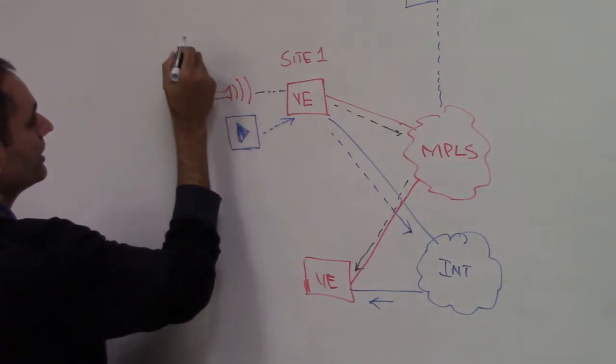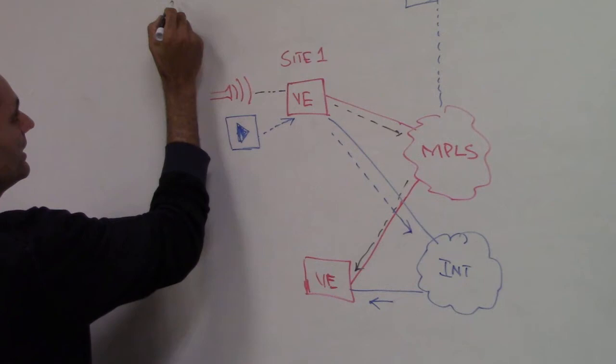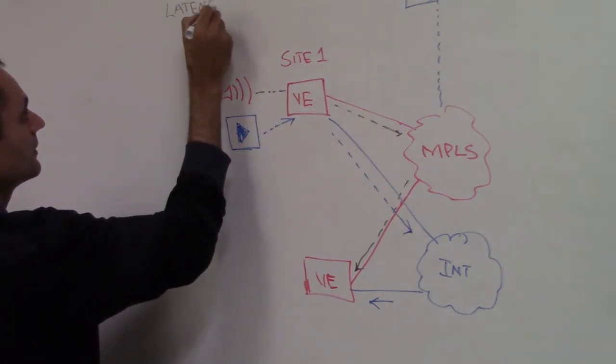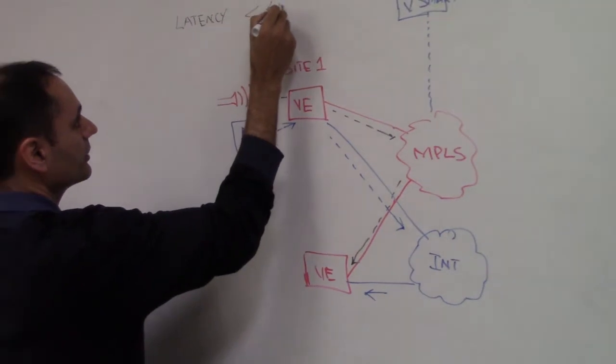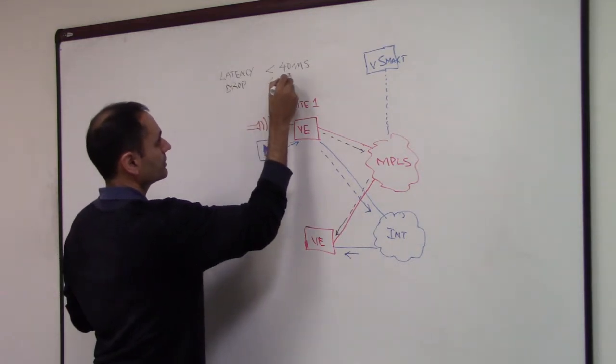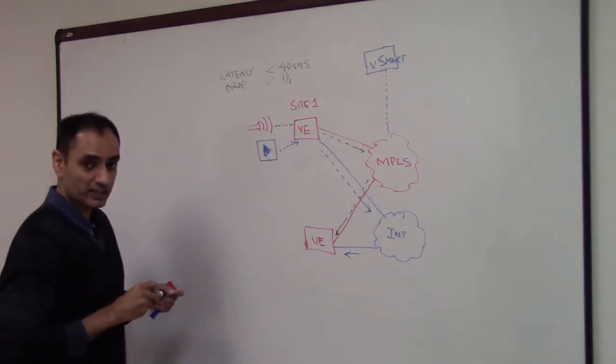So let's say voice application required a certain SLA from the transport and that is latency of less than 40 milliseconds, drop less than 1% on the given underlay or the transport.